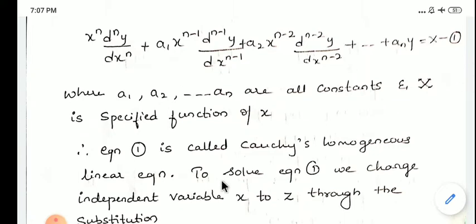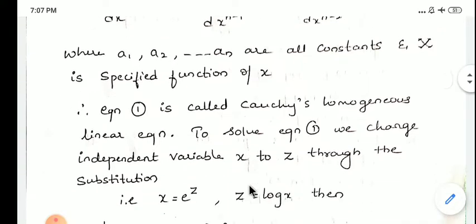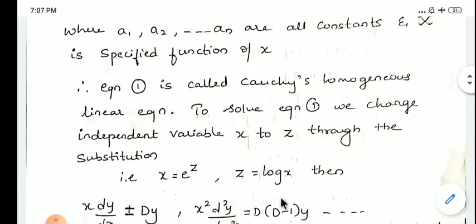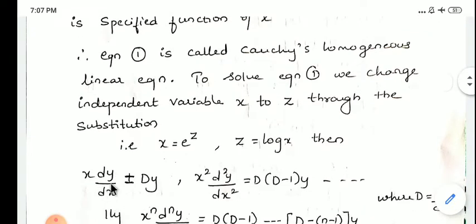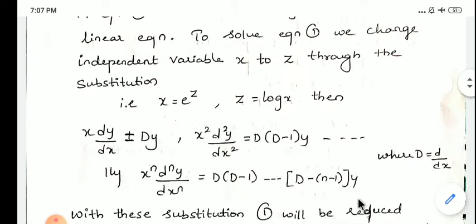To solve equation 1, we use the substitution x = e^z, so z = log x. When z = log x, dz/dx = 1/x. Therefore, x(dy/dx) = Dy, and x²(d²y/dx²) = D(D-1)y, where capital D = d/dz.